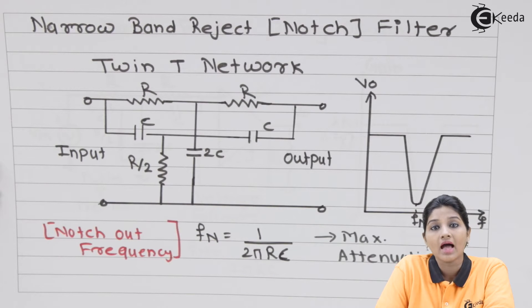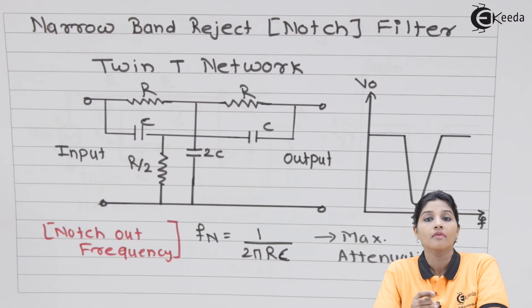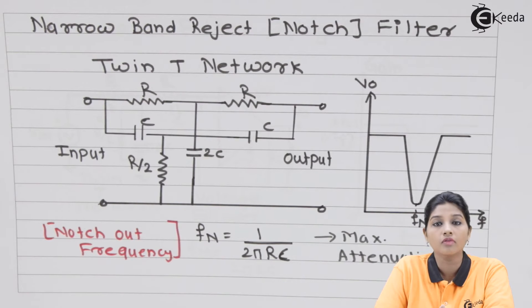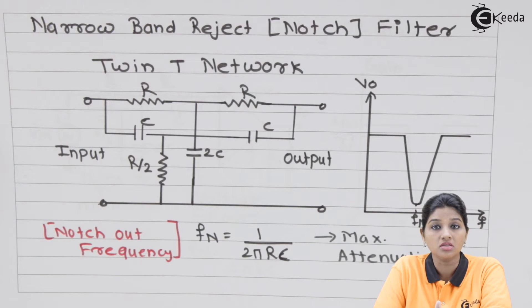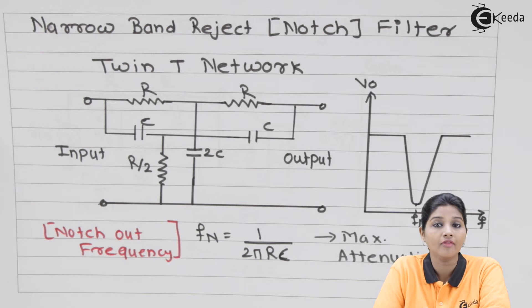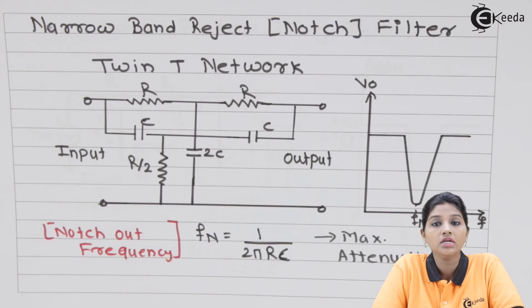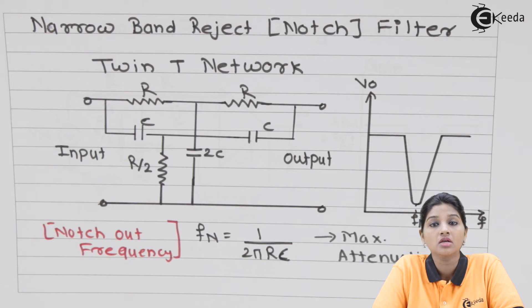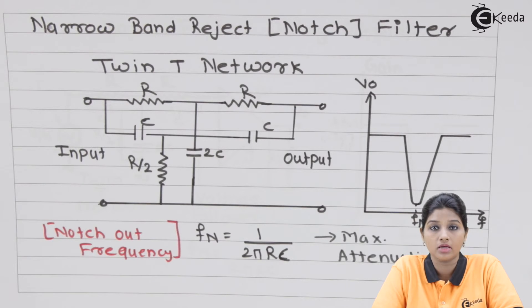The twin T network, having a low Q factor, provides higher bandwidth. This disadvantage is eliminated by using an op-amp. When we connect an op-amp along with the twin T network, we get a higher value of Q factor and therefore less bandwidth. Notch filters or twin T notch filters are basically used to remove signal frequencies such as 50 Hz power line hum.